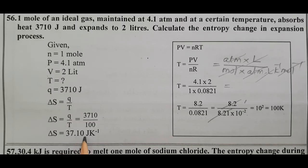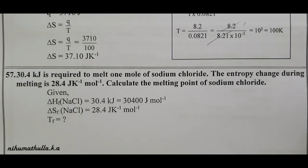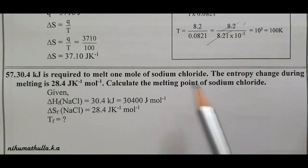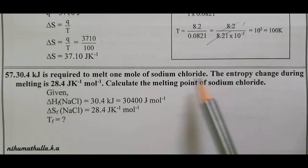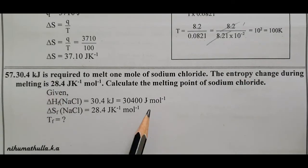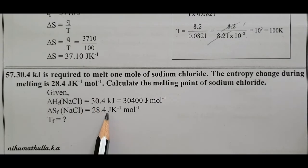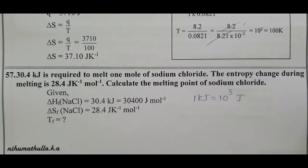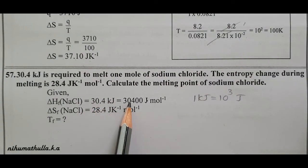Question number 57: 30.4 kilojoules is required to melt one mole of sodium chloride at the melting point. The entropy change during melting is 28.4 joule Kelvin power minus 1. Note that the enthalpy value is in kilojoules but entropy is in joules, so 1 kilojoule equals 1000 joules, converting to 30400 joule mol power minus 1.